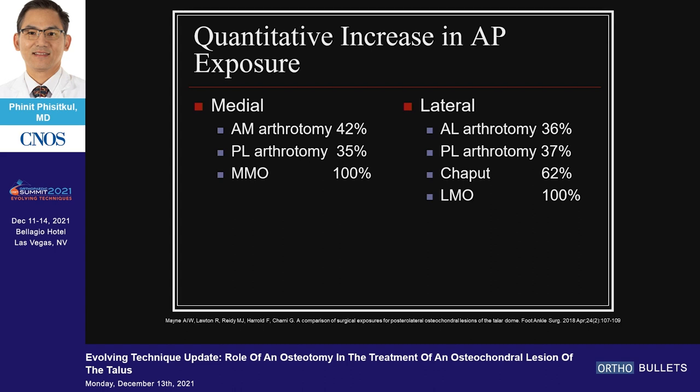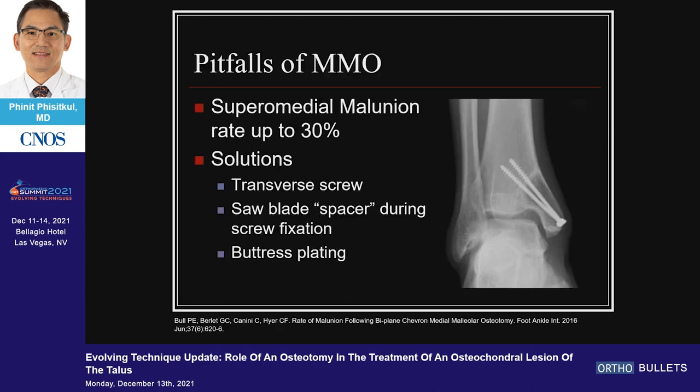Arthroscopy alone gives you 30 to 40%. Chaput osteotomy on the lateral side gives you 62%. Pitfalls — this is critical.